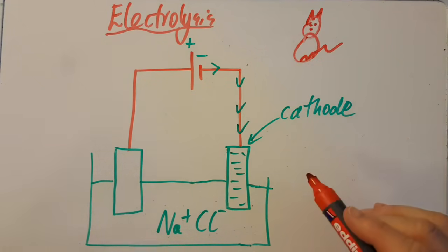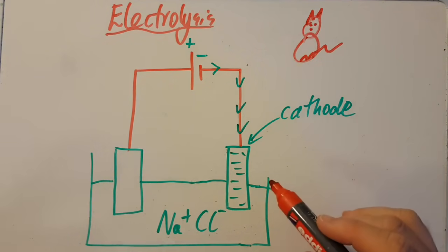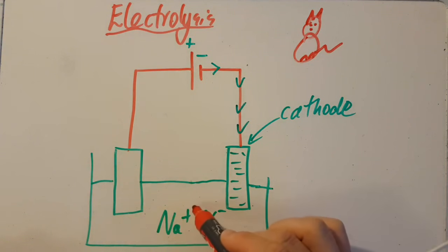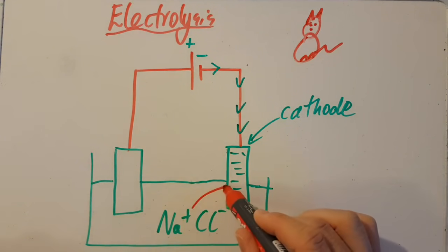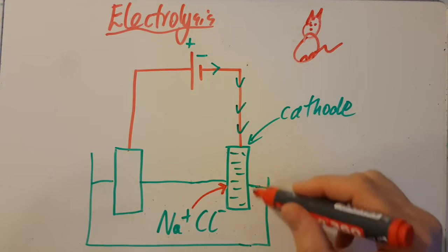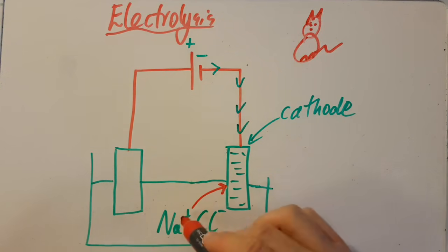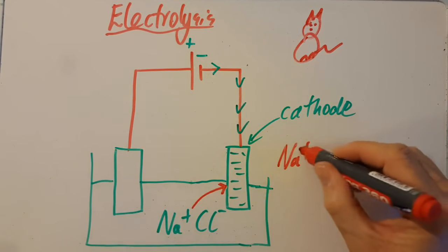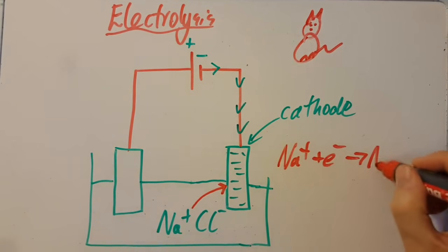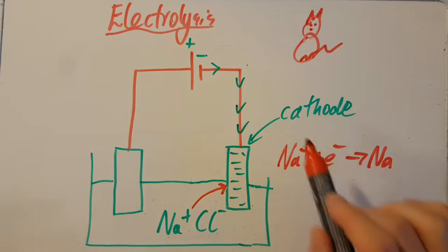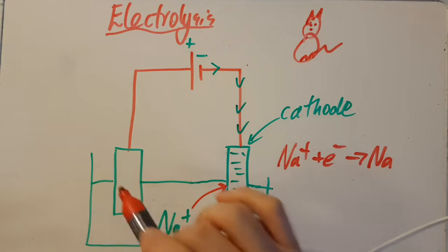So reduction happens at the cathode. Reduction is gain of electrons. We have the sodium ion here electrostatically attracted to that negative electrode, and it's going to pick up an electron. The negative electron and sodium ion are going to come together and make a sodium atom. And so that's reduction - reduction is gain of electrons. So that is definitely the cathode, leaving the other as the anode.